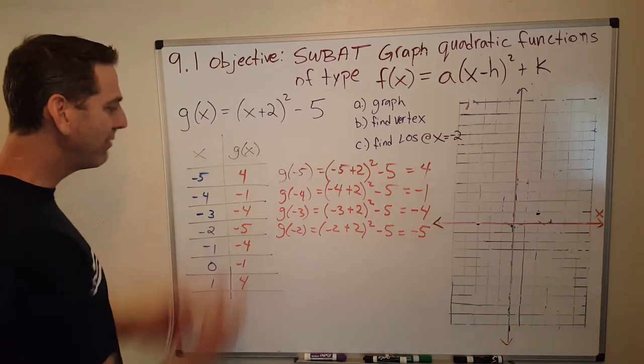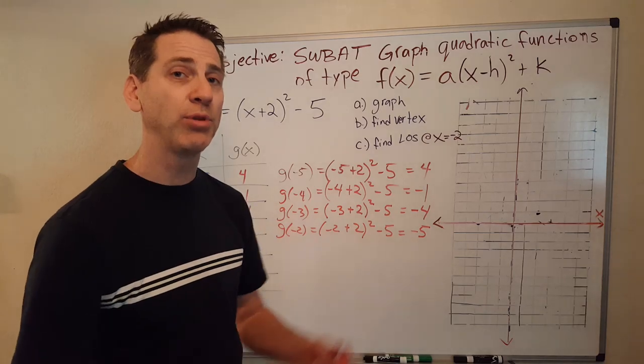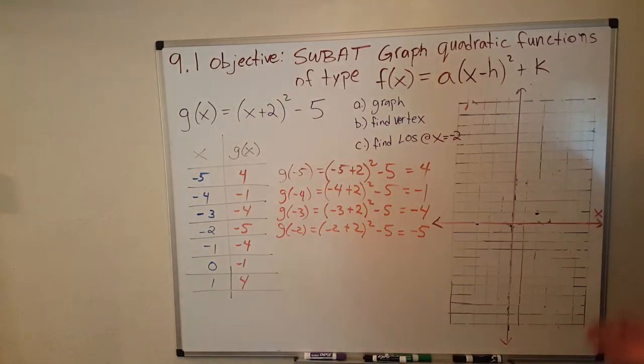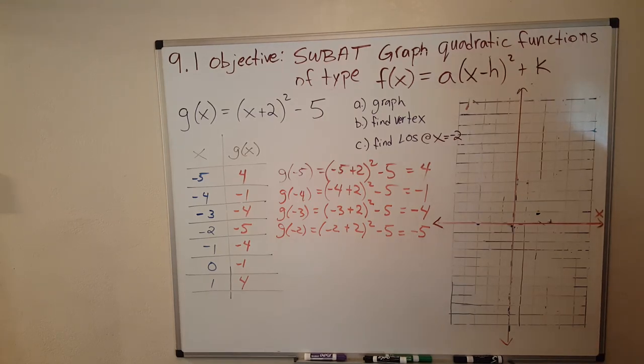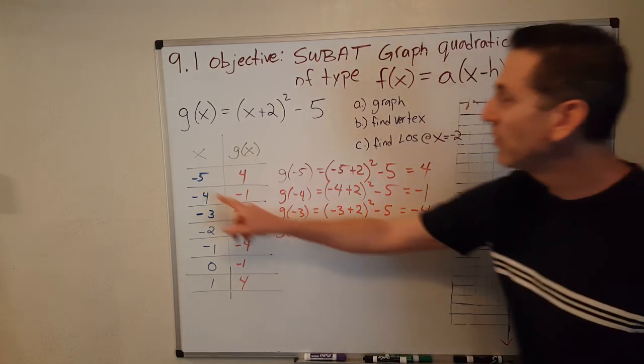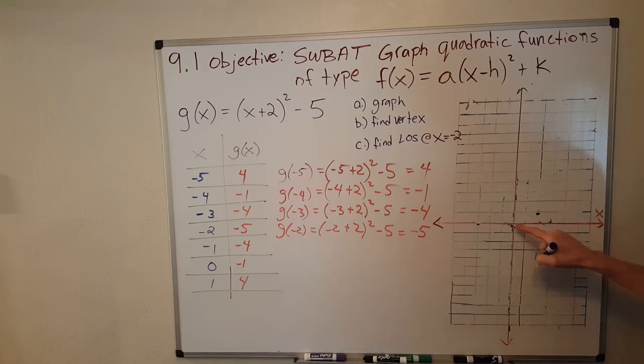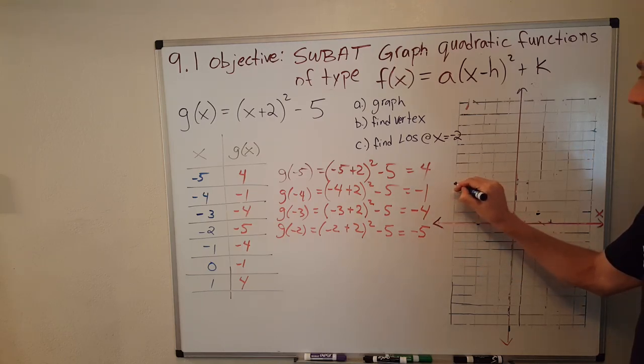Okay, so now we have our ordered pairs. Let's go ahead and plot these points so we can get our parabola. Alright, it looks like my coordinate grid is kind of getting worn out here. Okay, so we've got negative 5 and 4. Let's find that. Negative 5, 1, 2, 3, 4, 5. And we've got 4. 1, 2, 3, 4. There's our first point.